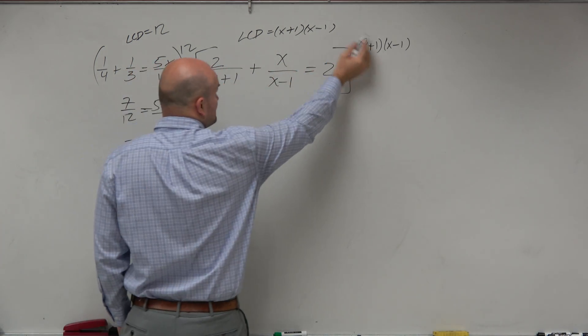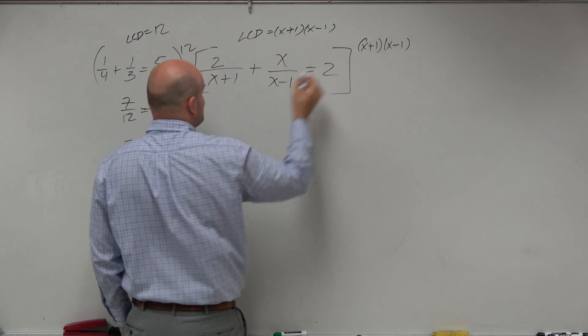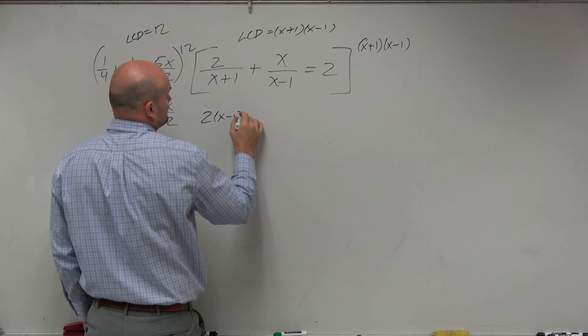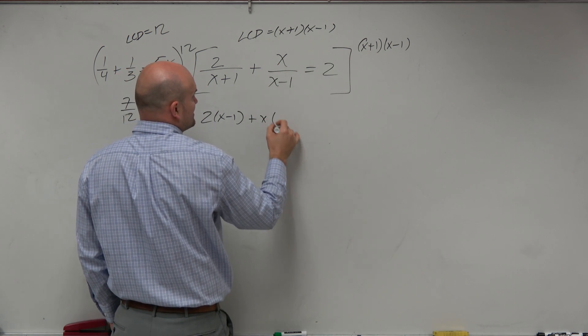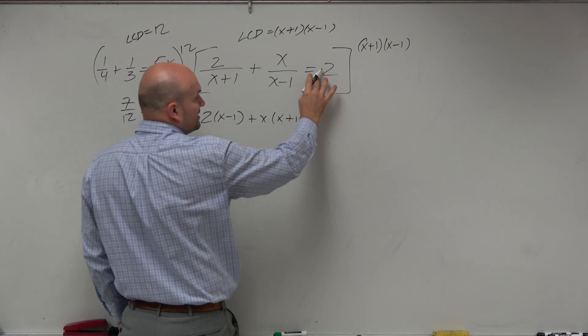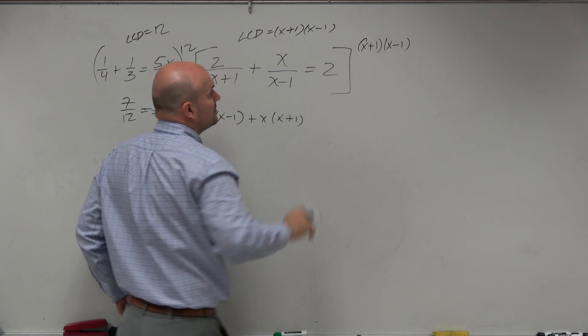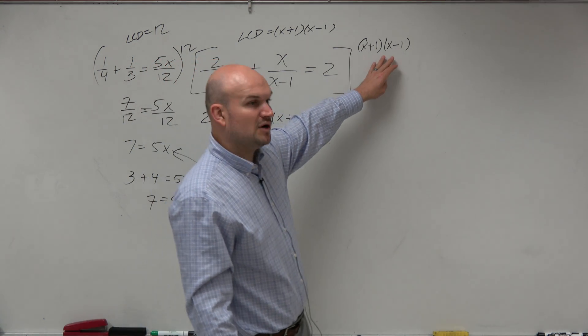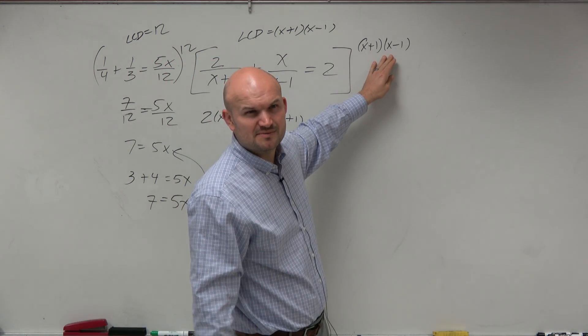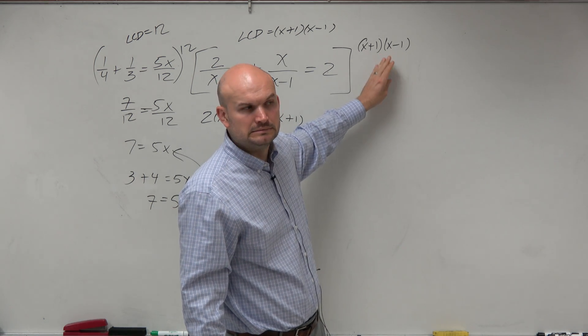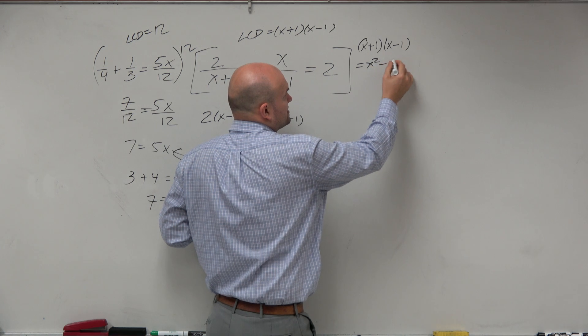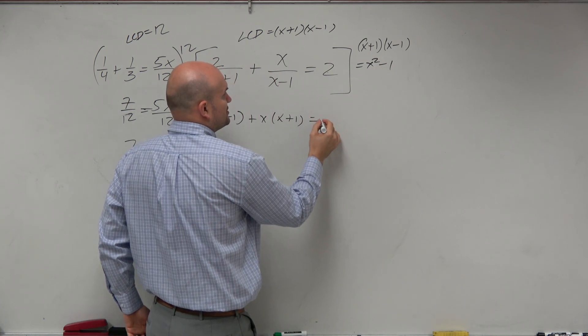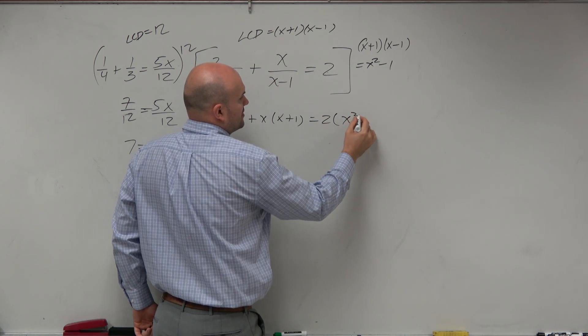So x plus 1, x plus 1 is divided out, so I'm left with 2 times x minus 1. x minus 1 is divided out, so I'm left with x times x plus 1. And then here, I have 2 times x plus 1. Now, we can multiply this out. What's x plus 1 times x minus 1? Isn't that the same thing as x squared minus 1?